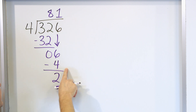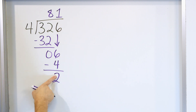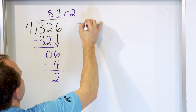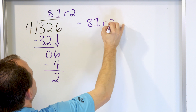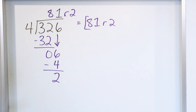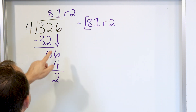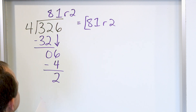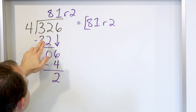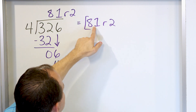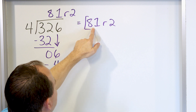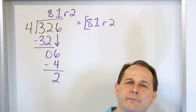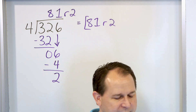I try to grab the next digit and bring it down, but there's nothing there. I check that 4 is less than 2 — wait, the remainder 2 is less than 4, which is correct. So the answer is 81 with a remainder of 2. For instance, if I have 326 footballs and put them on 4 different trucks, every truck will get 81 footballs evenly, but I'll have 2 footballs left over — that's the remainder.